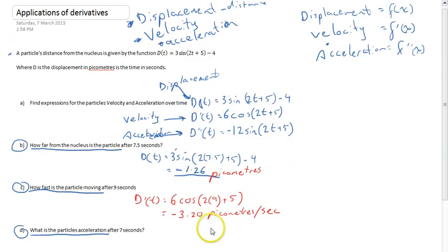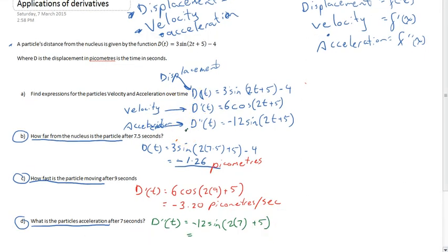Finally this last question: what is the particle's acceleration after 7 seconds? The particle's acceleration after 7 seconds - we can use our second derivative because we're looking at acceleration this time. Our second derivative is -12sin(2t+5). We're going to sub 7 in for t. You can type that whole thing into your calculator. This should be getting fairly familiar by now. When you type that into your calculator you'll get -1.80.